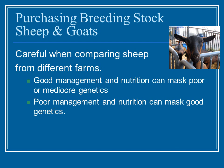Purchasing breeding stock — sheep and goats. First, you have to decide if you really want breeding stock or feeder animals. We'll talk more about feeder animals later, but essentially you buy them at weaning, raise them up, feed them, shelter them, and take them to market. You do not plan on breeding them.